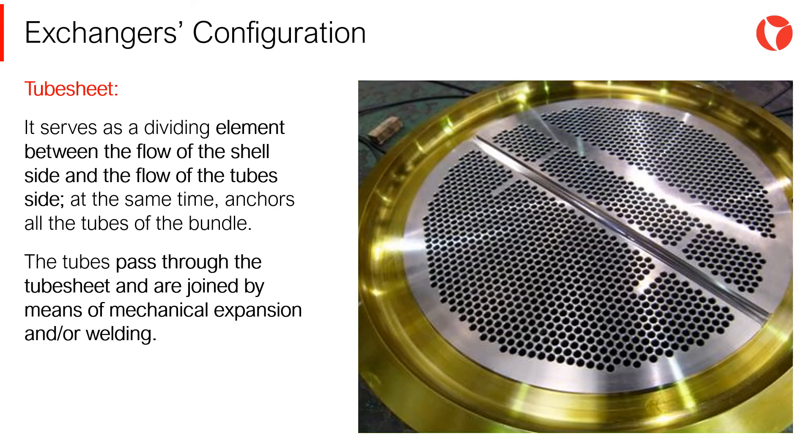The tube sheet is another key element of this type of equipment. It serves as a dividing element between the flow of the shell side and the flow of the tube side. At the same time, it anchors all the tubes to the bundle. The tubes pass through the tube sheet and are joined by means of mechanical expansion and/or welding.